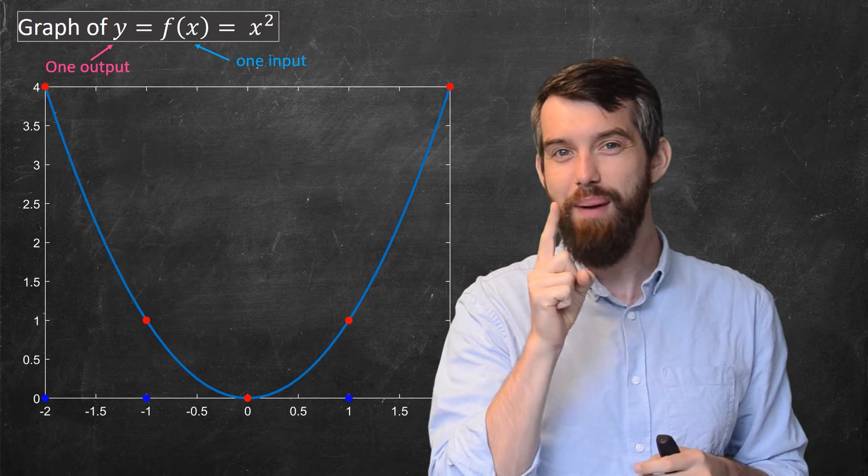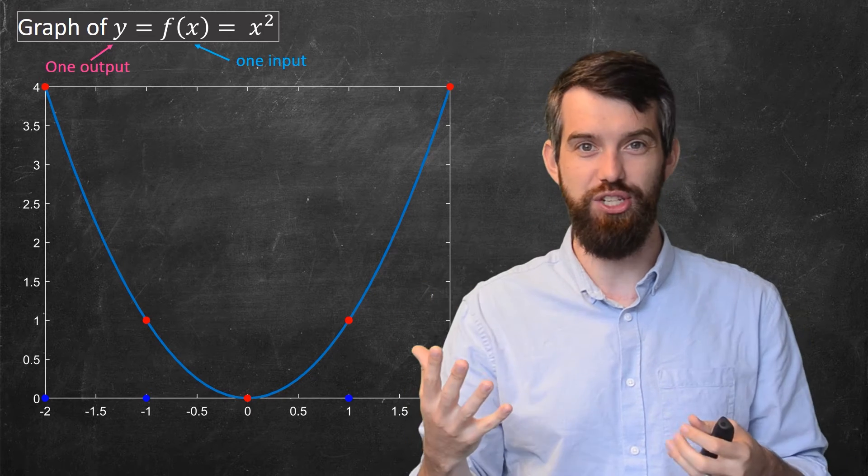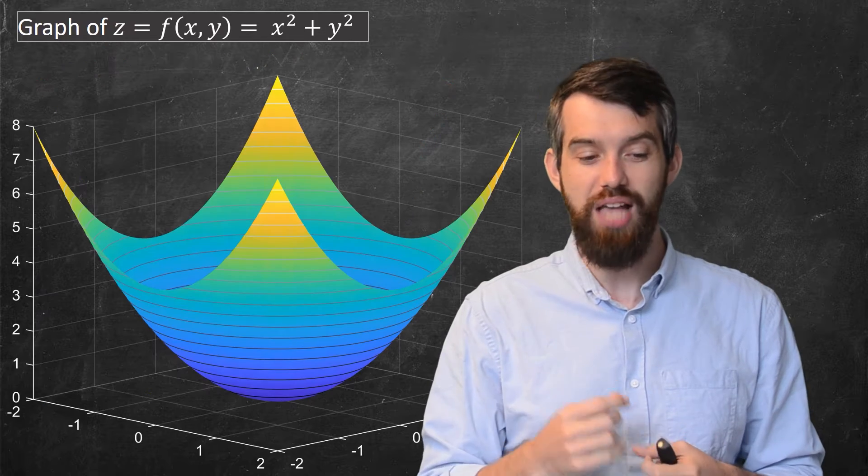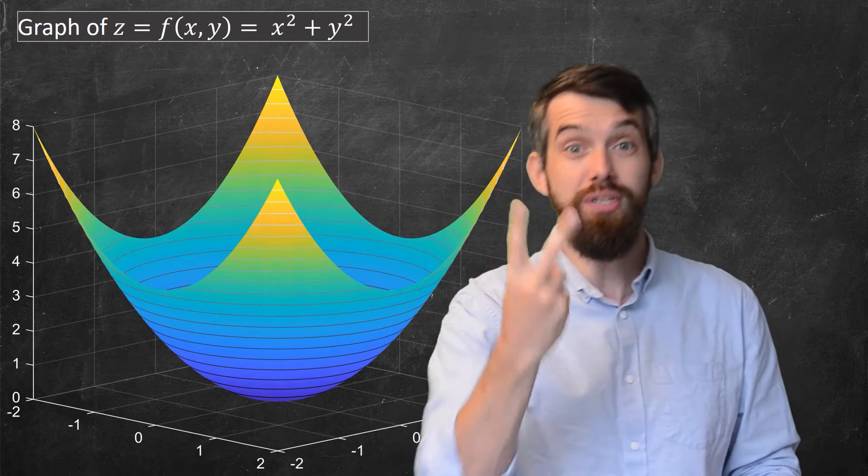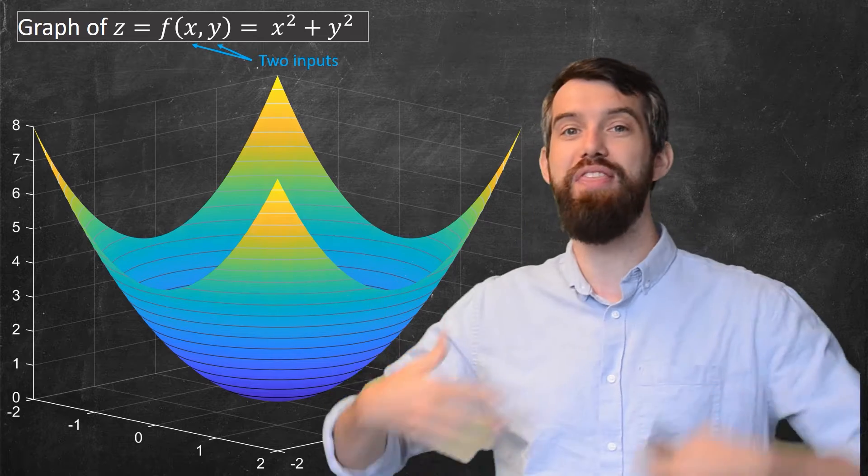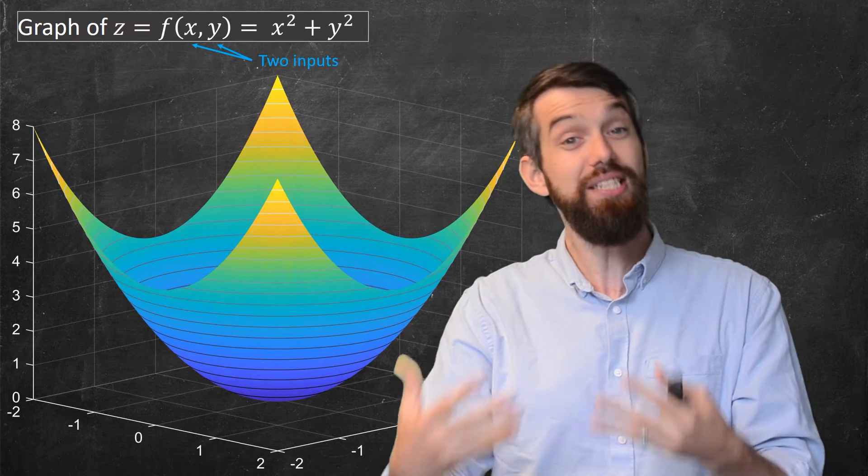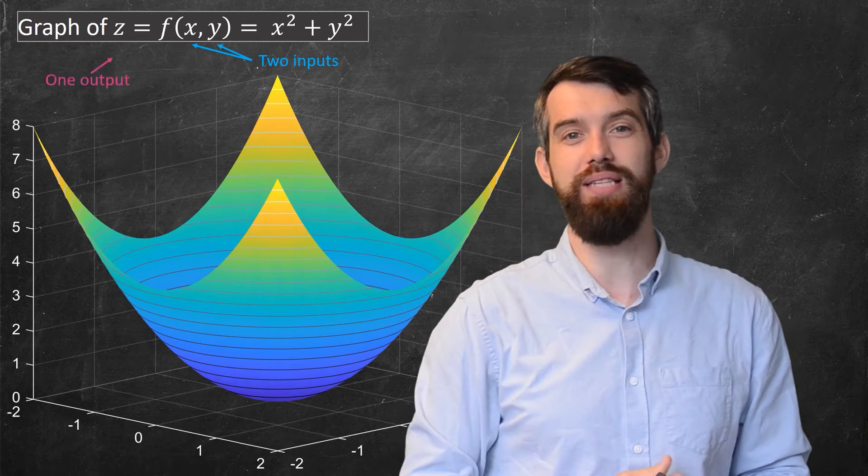So let's take that same idea and go up a dimension. And what I'm going to do now is I'm going to say there are functions of x and y with an output of z. That is, there are two different inputs, the x and the y that get fed into my function, and I still only have one output z.